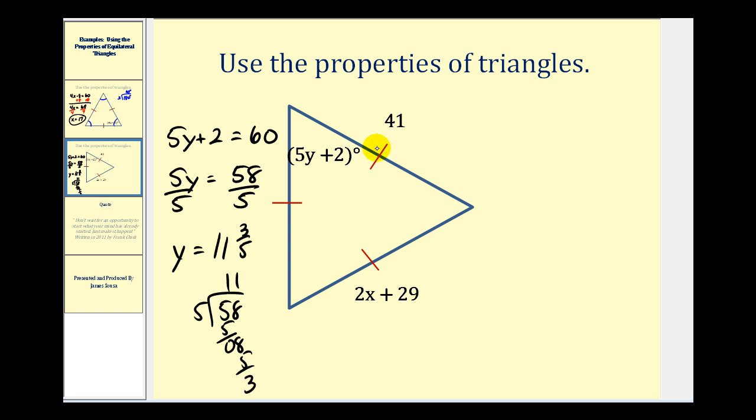Now let's talk about determining the value of x. To determine the value of x, since all of the sides have the same length, if this side has a length of 41, this side over here must also have a length of 41. So the equation to determine the value of x would be 2x plus 29 equals 41.